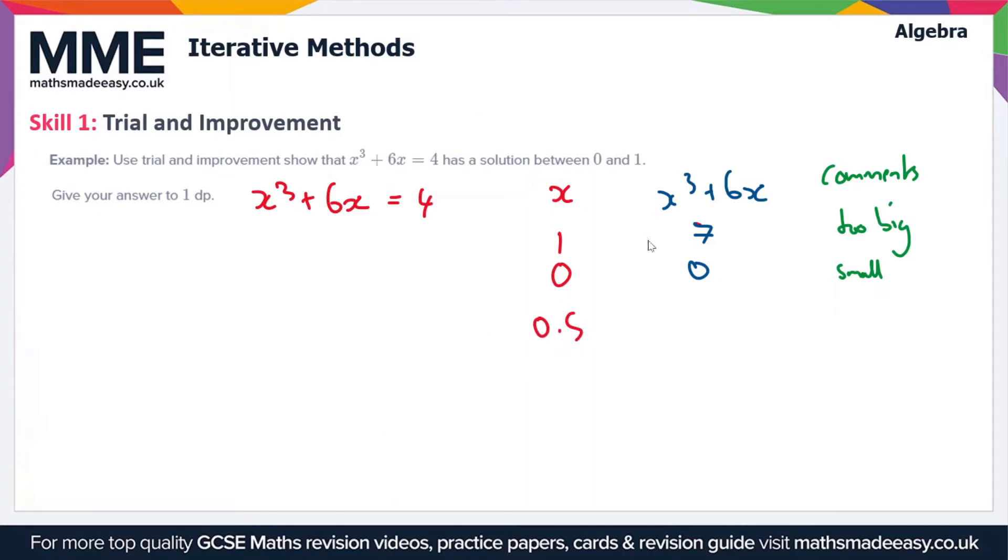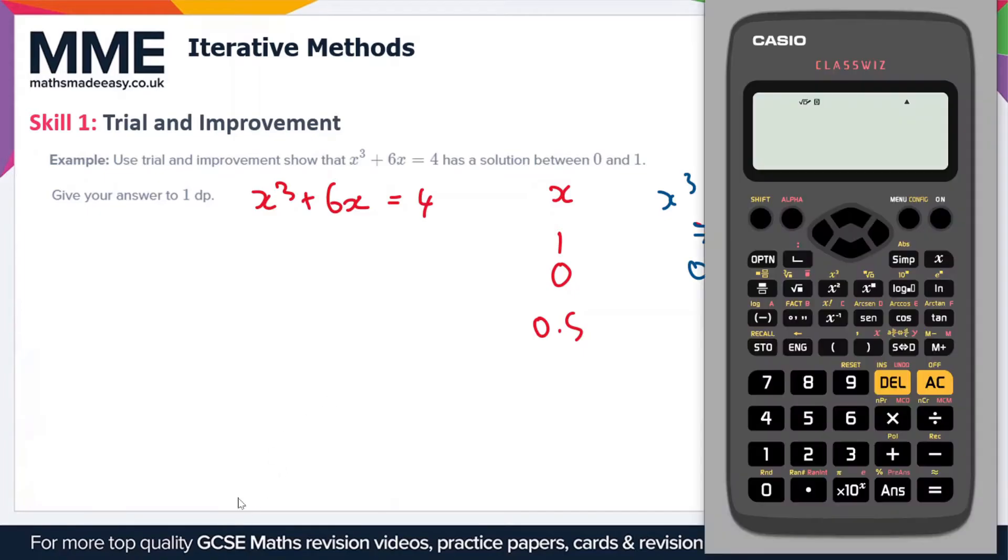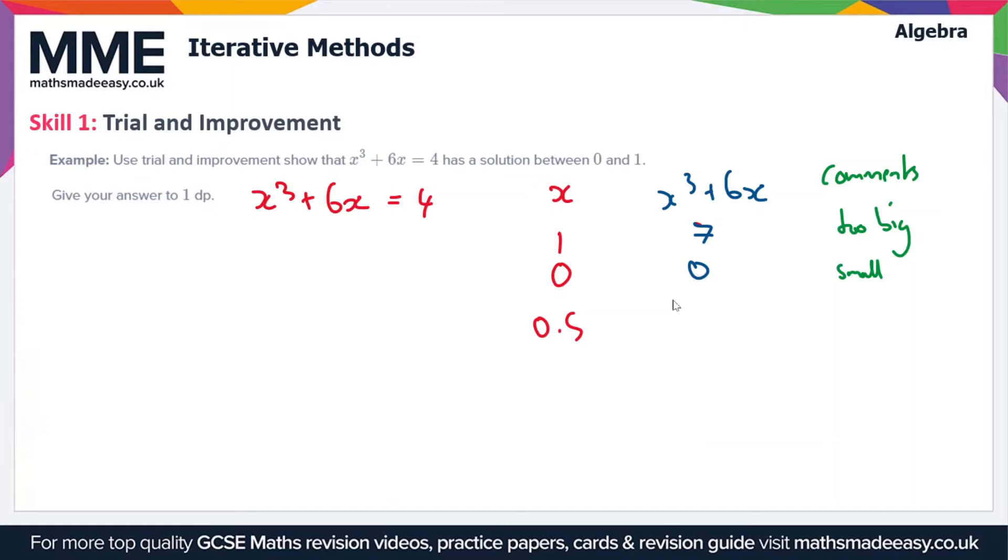So now we're going to use a calculator at this point because it's going to start getting complicated. So we're going to do 0.5 and then we're going to cube this, and then we're going to add 6 times 0.5. This is going to give us a value of 3.125, and that is too small again. So this is why it's called trial and improvement, because you just keep trying answers, you get closer each time, so you improve on your answer.